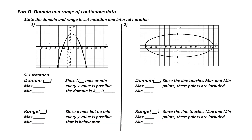Part D: Domain and range of continuous data. State the domain and range in set notation. I look at my first graph and I want to know what the domain is. Domain is the listing of all x values. My graph goes to the edge of the grid, which means it keeps going. If this were to keep going, the values represented would keep going in both directions — above and below. That means there is no maximum or minimum, and every value that exists is part of my domain. We call this all real numbers.